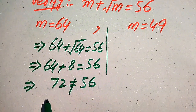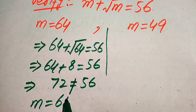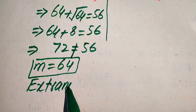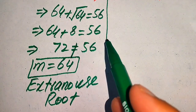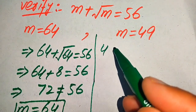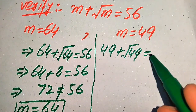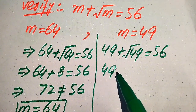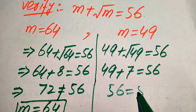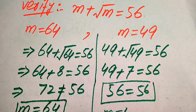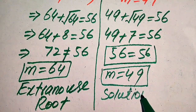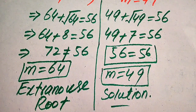This means m equals 64 is an extraneous root of the given equation. Extraneous roots are roots that do not satisfy the original equation. Now checking m equals 49: 49 plus square root of 49 equals 49 plus 7 equals 56, which does satisfy the equation. Therefore m equals 49 is the only solution of the given equation. Thank you for watching — please subscribe to my channel for more exciting videos.